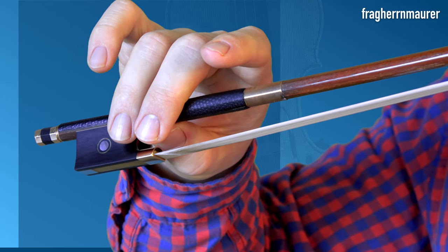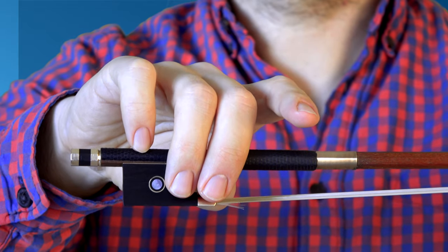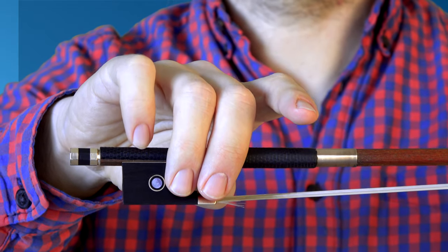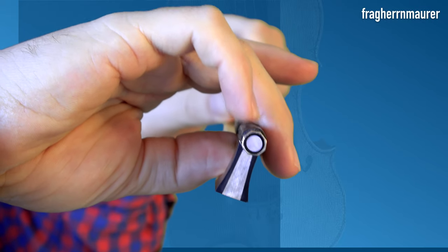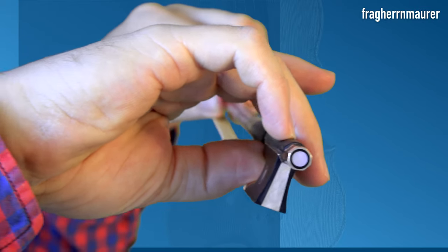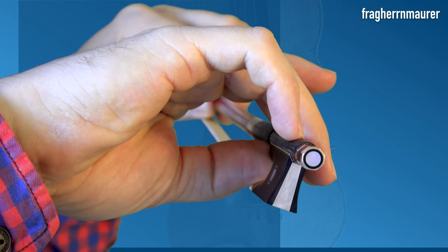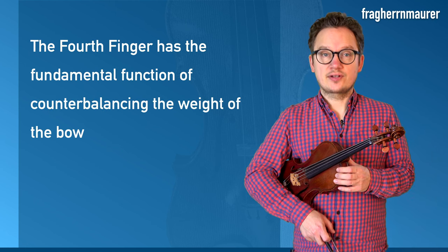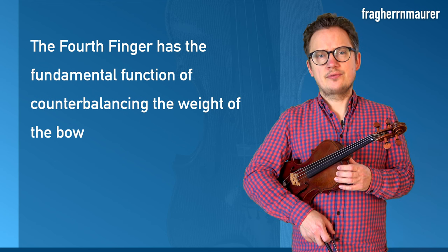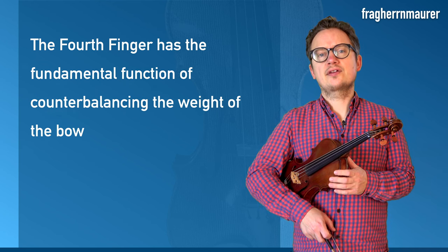Set your fourth finger fairly close to your third finger on top of the stick. However, be careful not to place your finger on the topmost position of the octagonal stick, but place it one space further towards you. This way your fourth finger cannot slip out of position and it can take on the great responsibility of carrying the stick's weight.